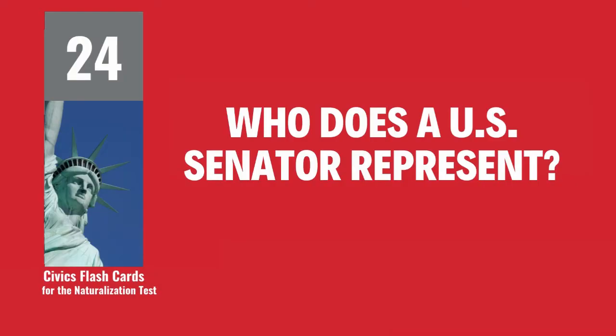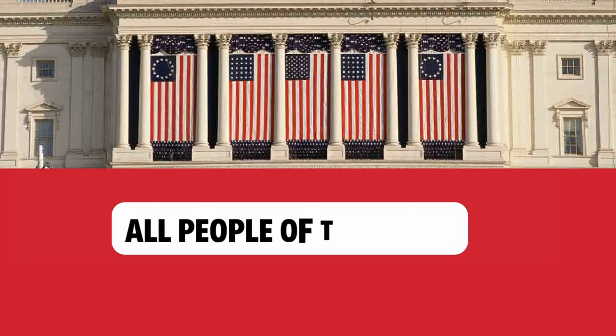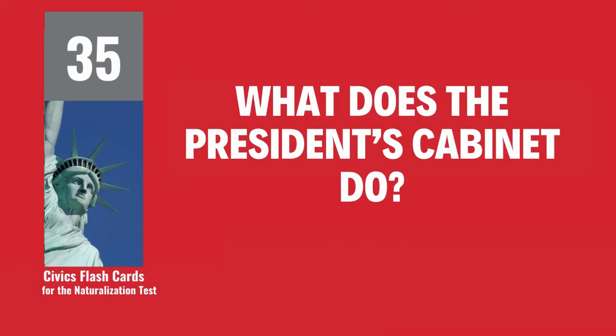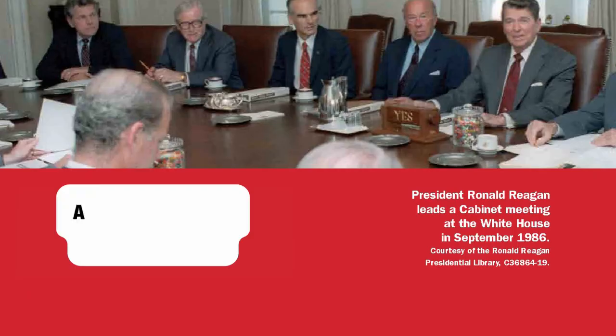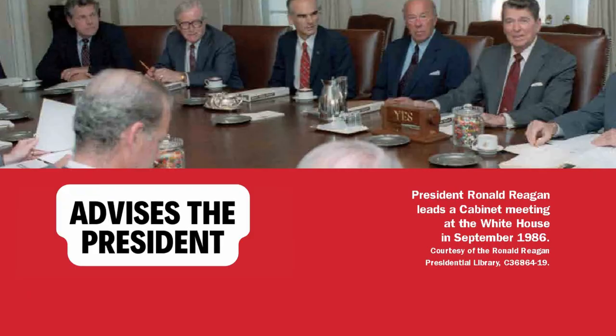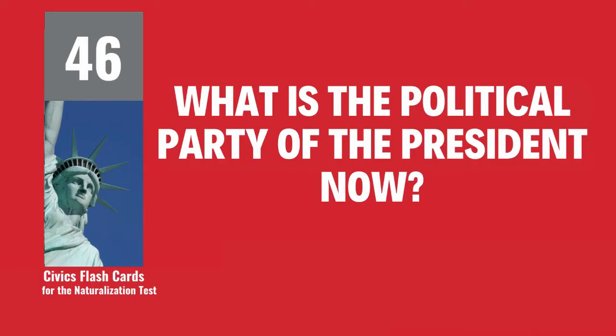Who does a U.S. senator represent? All people of the state. What does the President's Cabinet do? Advises the President. What is the political party of the President now? Democratic Party.